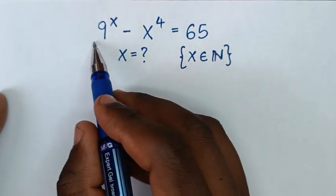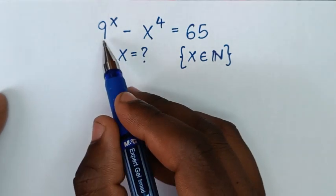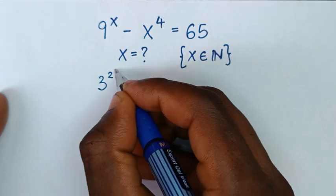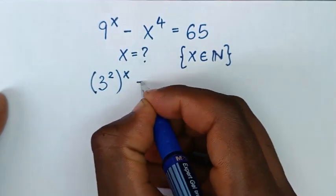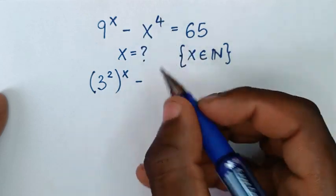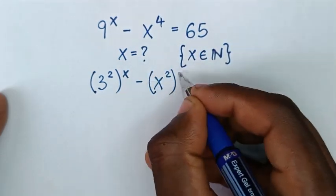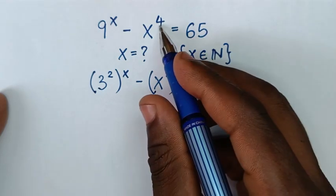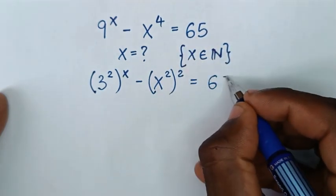To start from the left side, 9 power x — 9 is the same as 3 squared. Then bracket this power of x, minus x power 4, which is the same as x squared, bracket squared. Because power of 2 times power of 2 gives power of 4. This is equal to 65.